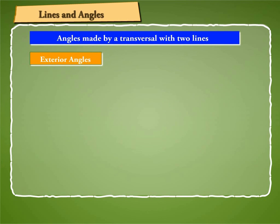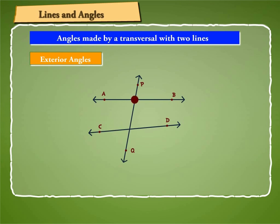Let us learn about angles made by a transversal with two lines. Suppose AB and CD are two lines cut by a transversal PQ at points L and M respectively. The transversal makes eight angles with the two lines AB and CD.